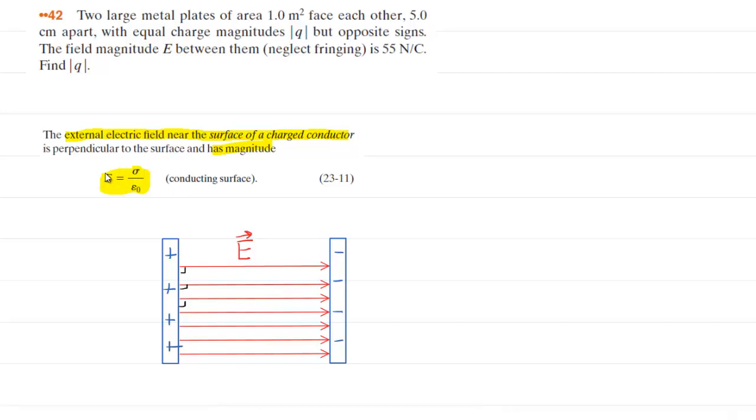What we have is that the electric field magnitude equals sigma, which is the surface charge density, and more on that in just a moment, divided by a constant value. That constant value we can look up in our textbook, so we'll see what that is in just a moment.